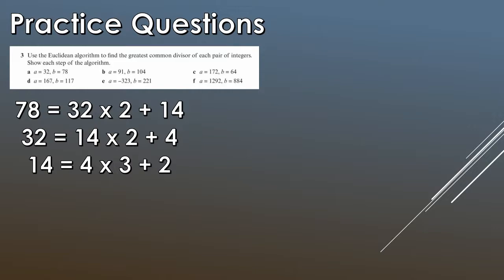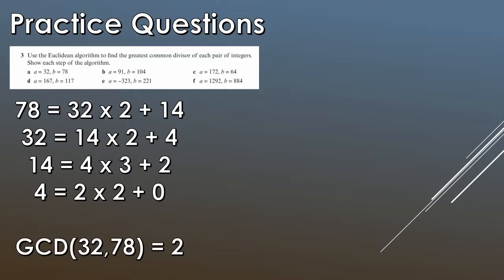So 14 is equal to 4 times 3 because that gives us 12 and then we add the 2 on. Again we keep going. 4 is equal to 2 times 2, we don't need to add a remainder on. So you look above, what was your last non-zero remainder? Well that was 2. So therefore the GCD of 32 and 78 is 2.